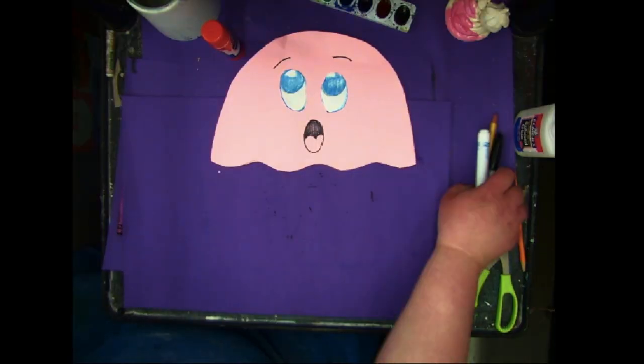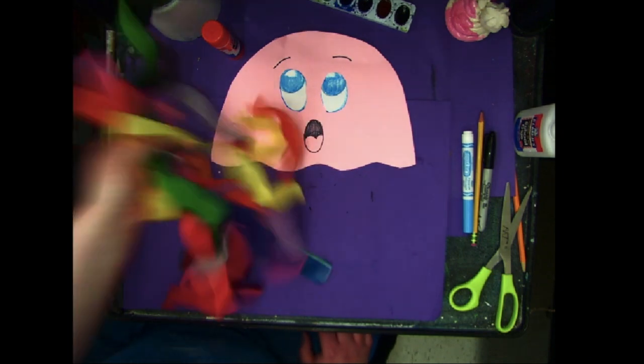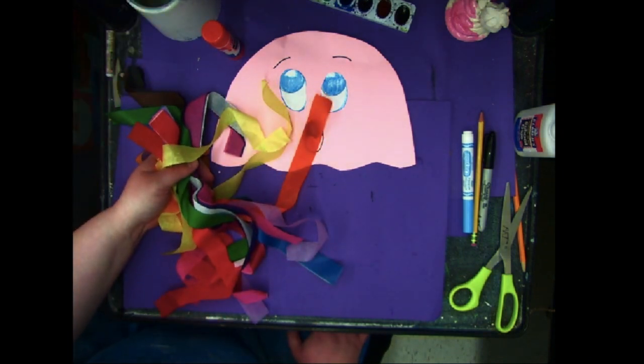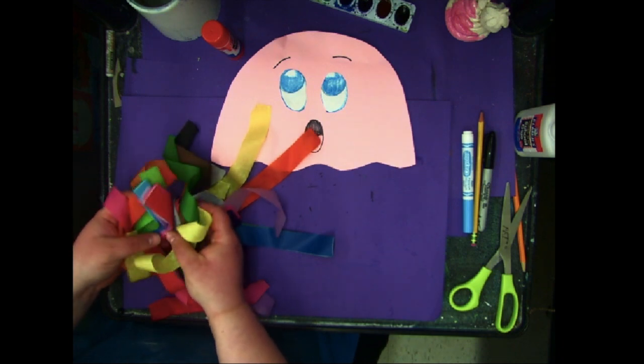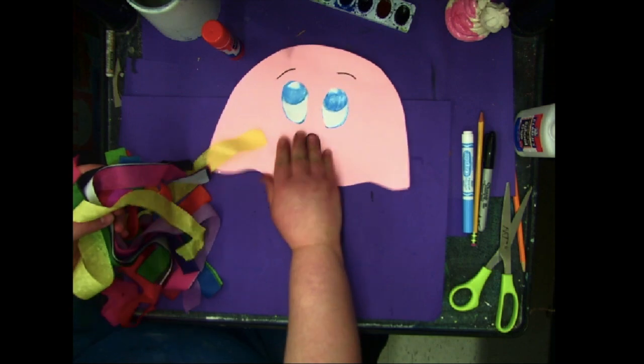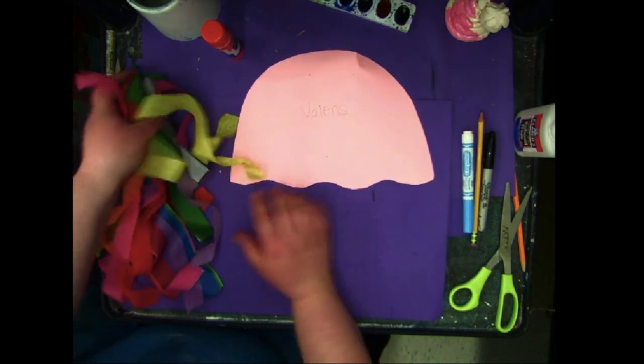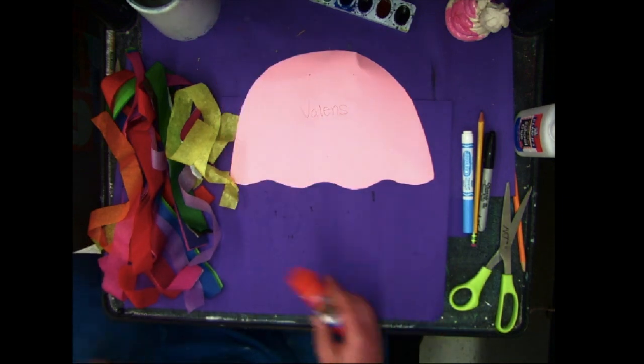So now it's time for the tentacles of the jellyfish. Over at a table what I have is I have some tissue paper that I cut into strips. So just get kind of like a handful. You can always get more or take back if you have too much. And so what I'm going to do is I'm going to flip Mr. Jellyfish over, or Mrs. Jellyfish, whatever kind of jellyfish you want to make.